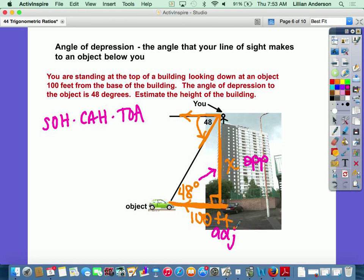So the trig ratio I'm going to use is tangent. So I set it up: the tangent of my angle, which is 48, equals my opposite side over my adjacent. Now I just have to solve for x.